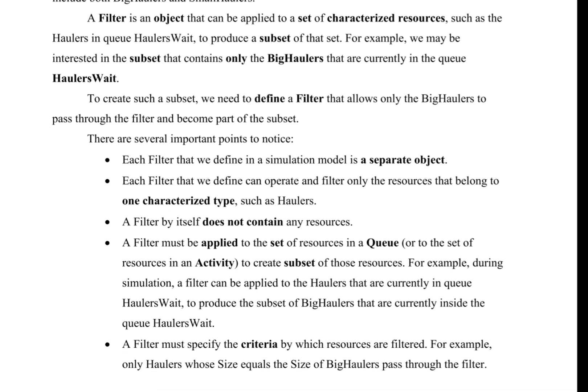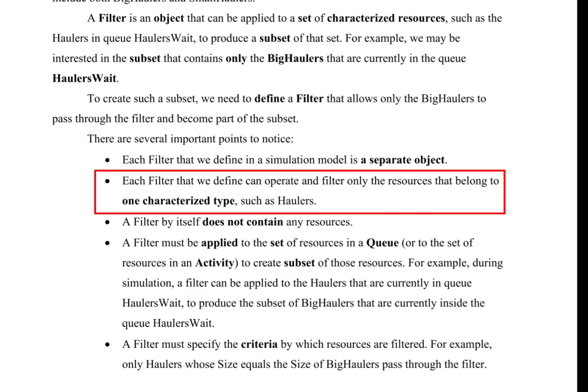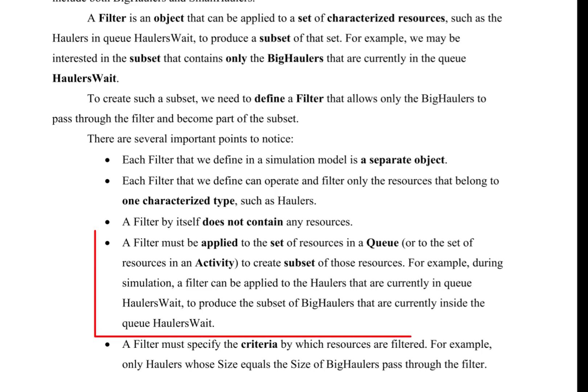There are several important points to notice. Each filter that we define in a simulation model is a separate object. Each filter can operate and filter only the resources that belong to one characterized type, such as haulers. A filter by itself does not contain any resources. A filter must be applied to the set of resources in a queue, or to the set of resources in an activity, to create a subset of those resources.